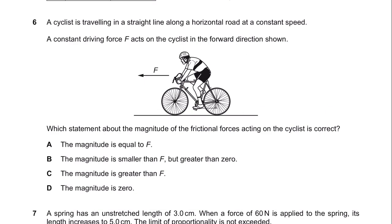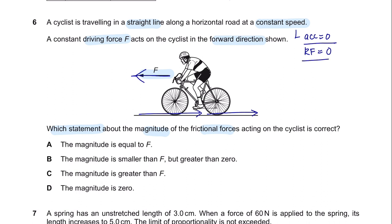Question 6. A cyclist is traveling in a straight line along a horizontal road at a constant speed. Constant speed means acceleration is 0 and resultant force is also 0. A constant driving force acts in the forward direction. The frictional force acts in the opposite direction. Since the resultant force is 0, the driving force equals the frictional force. So the magnitude of frictional forces is equal to F, which is correct. The answer is A.